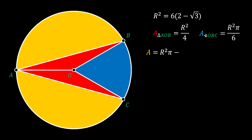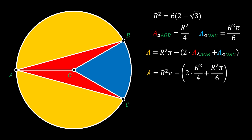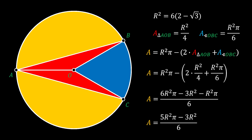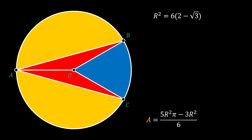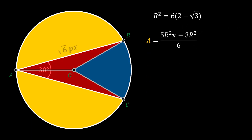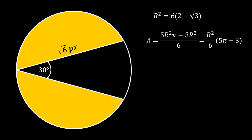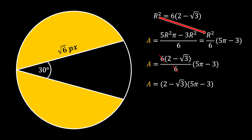The Pac-Man area equals the area of the full circle πr² minus the combined area of the two red triangles plus the area of the circular sector. Substituting our values and finding a common denominator, we get the area equals (5πr² − 3r²)/6. Isolating r²/6 as a common factor, we substitute r² = 6(2 − √3). Canceling the 6, we get that the Pac-Man area equals (2 − √3)(5π − 3).